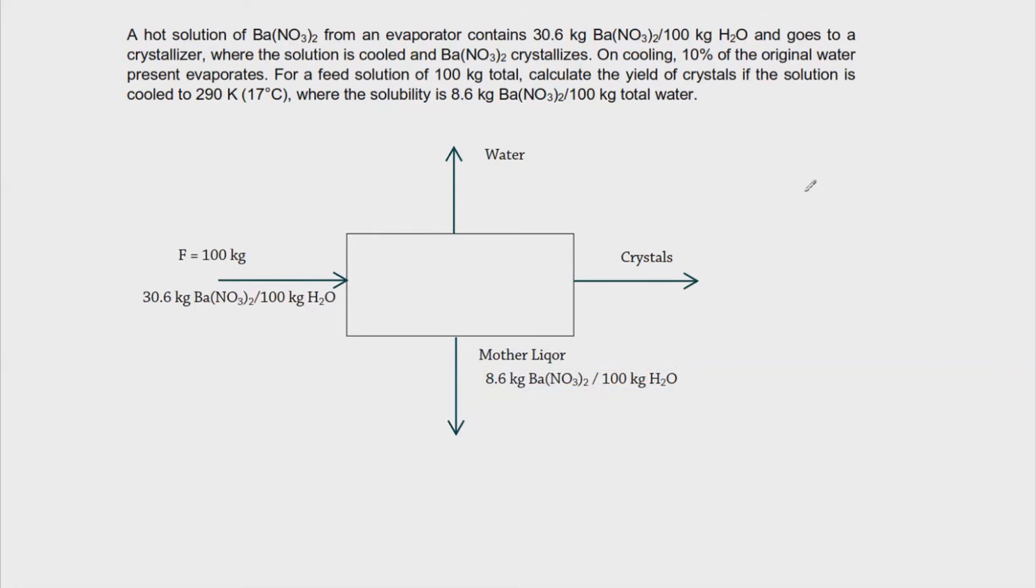So with this, we start with the overall material balance. And we know that for every OMB, we just have to write the inlet and then the outlet. So we have F is equal to W, let's just represent water as W, and then the crystals, and then as C, and then the mother liquor as, let's say L. So this is the OMB.